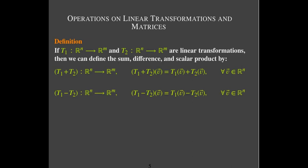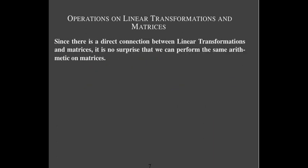The same idea applies with subtraction. And with a scalar multiple, we're going to have a new linear transformation which is k times t1, and we define the image of k times t1 as k times the image of t1 of v. It's very intuitive — exactly what we would expect.